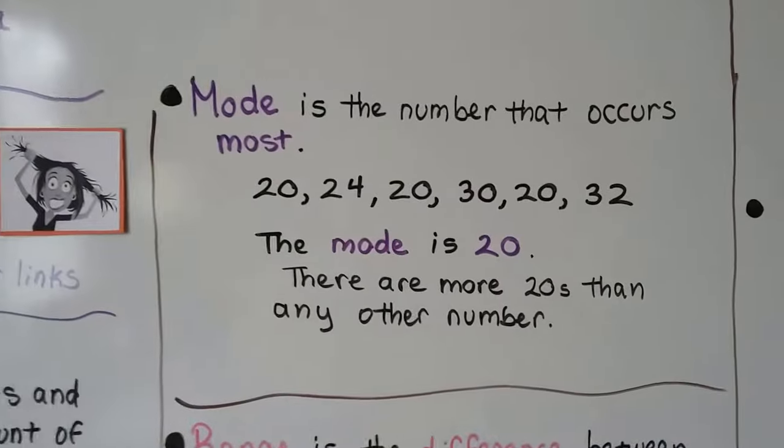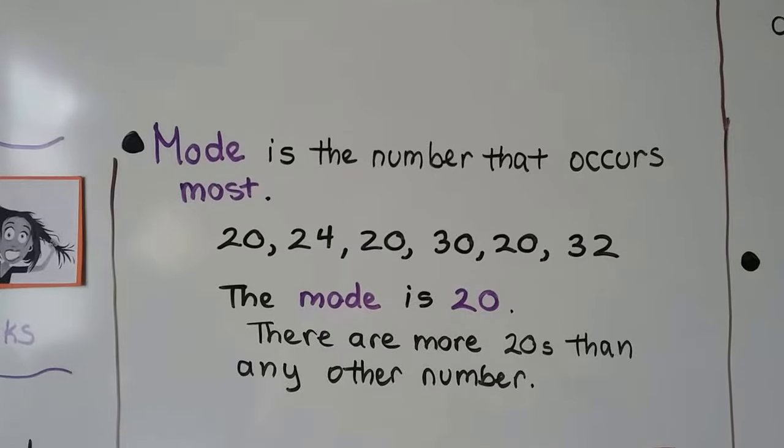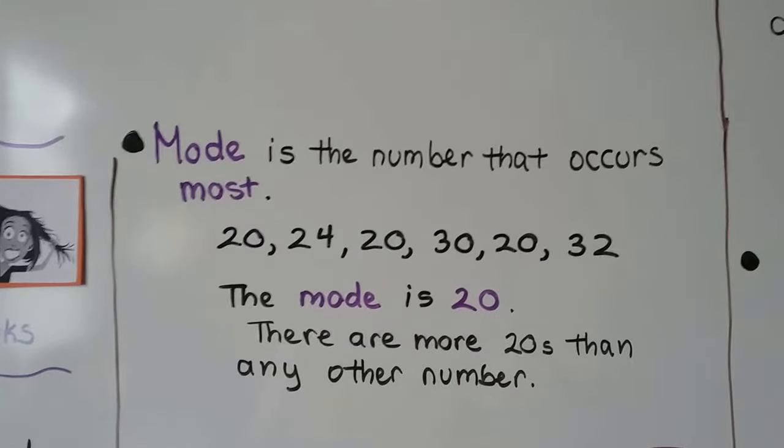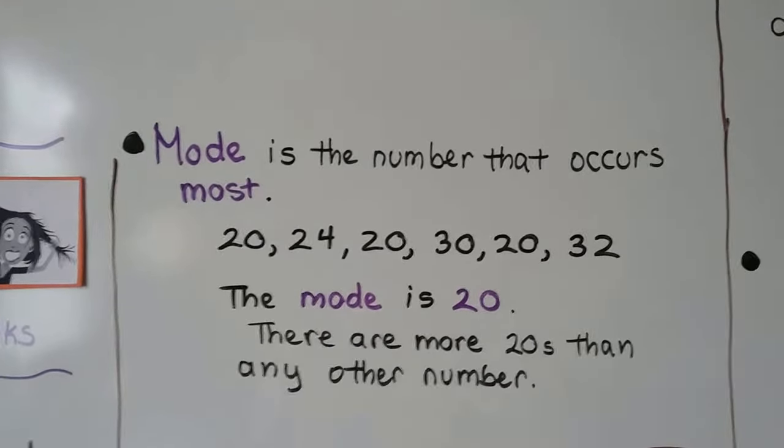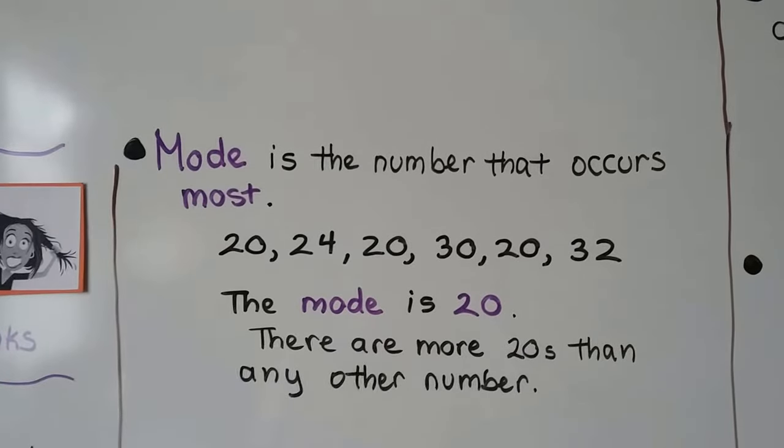Mode is the number that occurs most. So we have a 20, a 24, a 20, a 30, another 20, and a 32. So the mode is 20. There's more 20s than any other number. The mode is 20. It's the one that occurred the most.